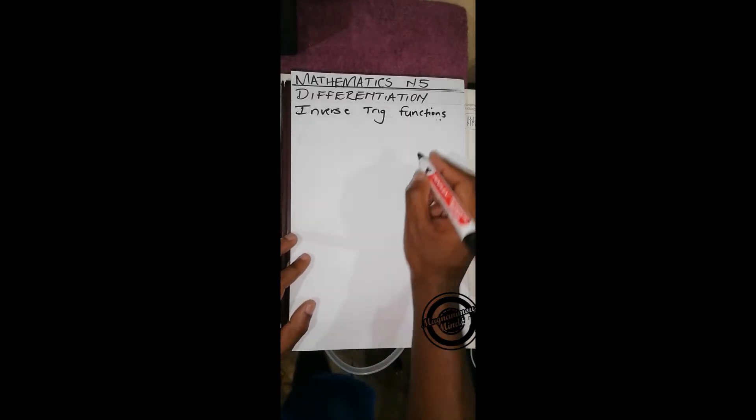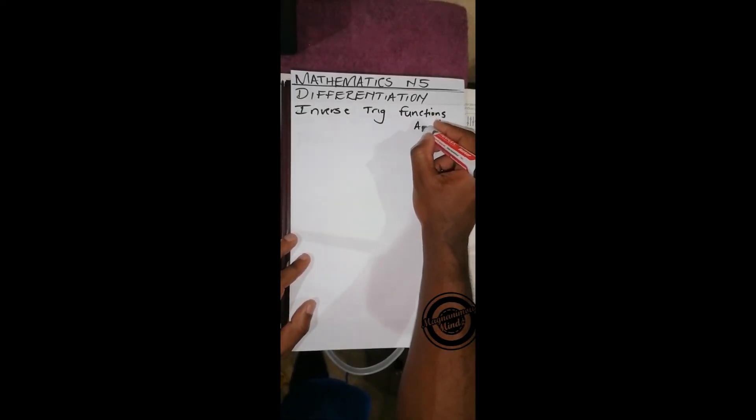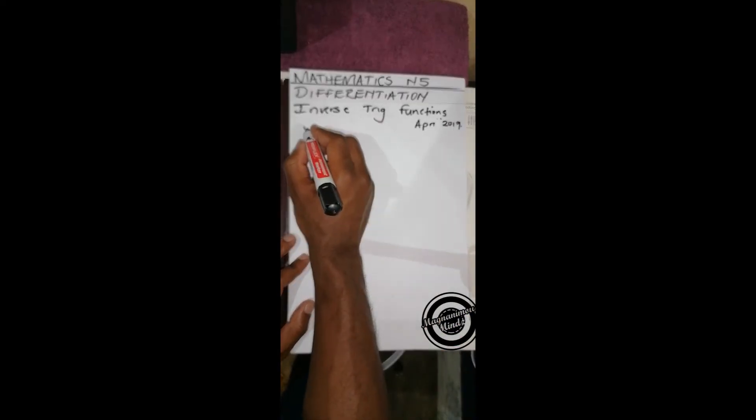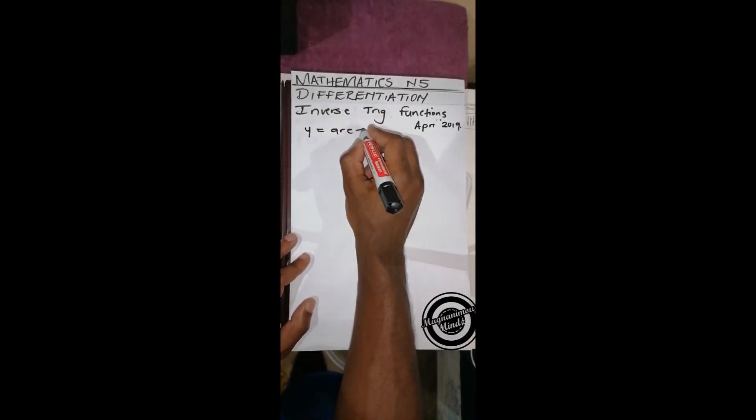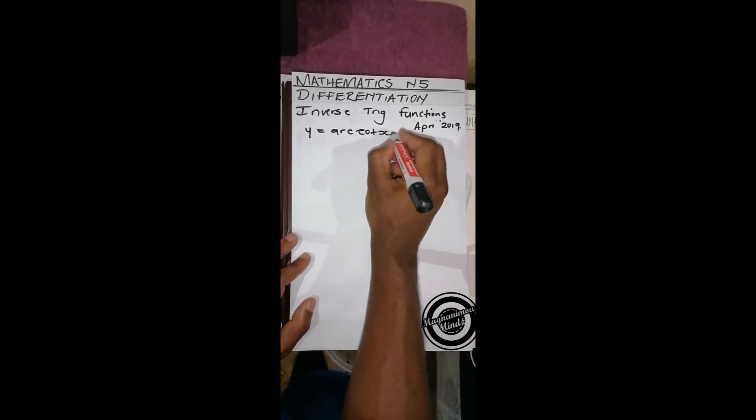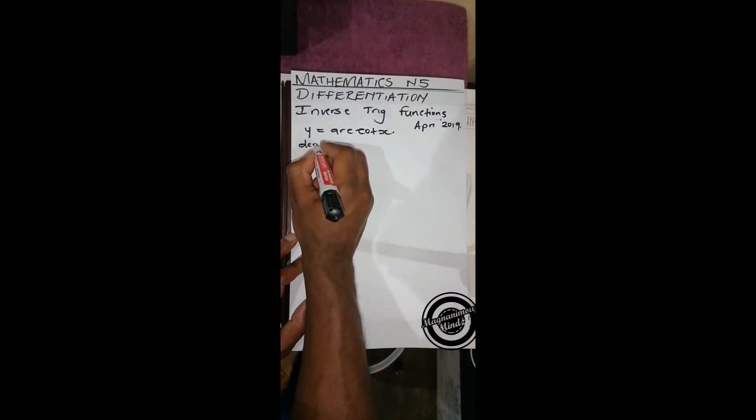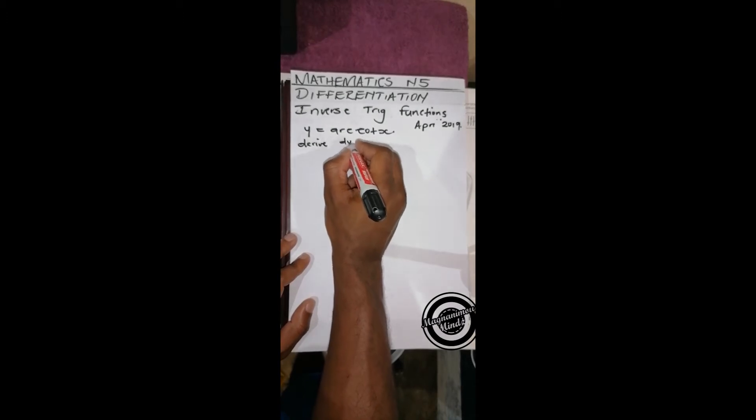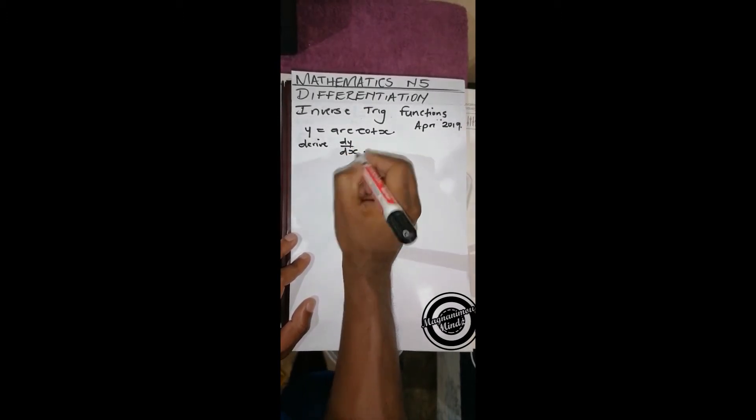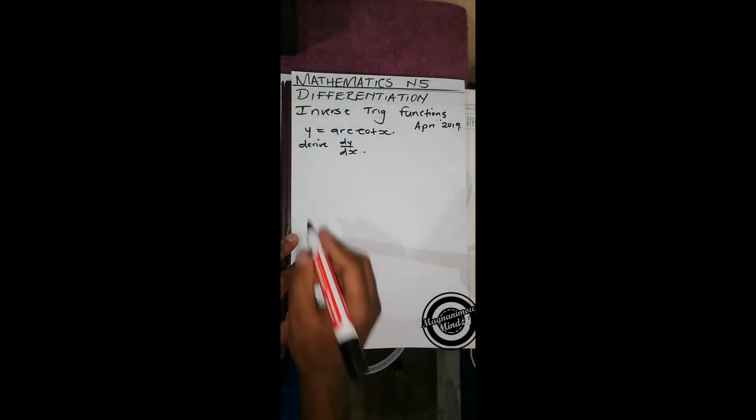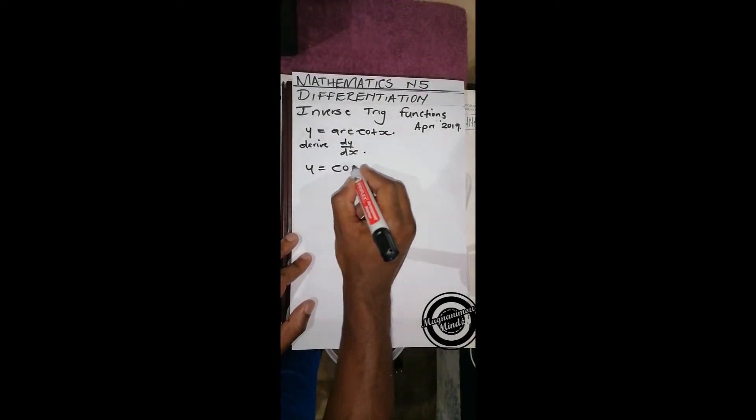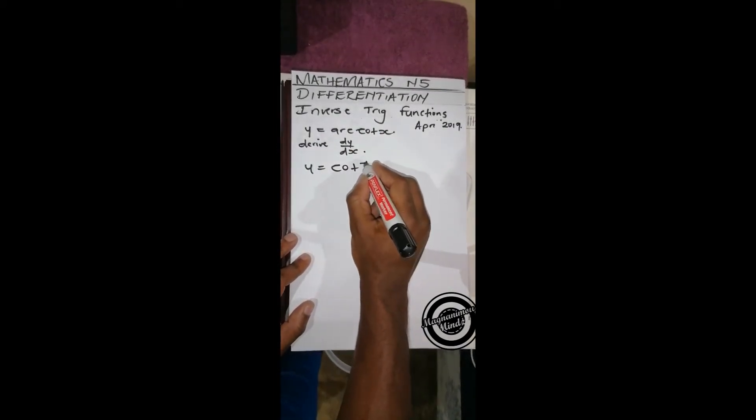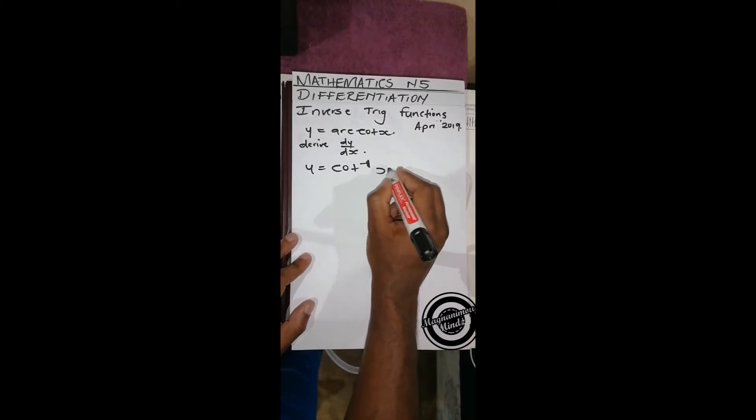In this video, we'll do a question from the April 2019 paper whereby we are given y equals arc cot x and we are told to derive dy over dx. We know that this can be written as y equals cot inverse x.